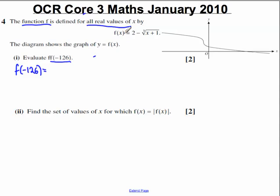Well, that's equal to, substituting in minus 126 here, 2 subtract the cube root of minus 126 plus 1, which is minus 125. What's the cube root of minus 125? What number multiplied by itself three times gives negative 125? Well, the answer is negative 5. So this is simply 2 subtract negative 5. 2 subtract negative 5 is equal to 2 plus 5, which is equal to 7. So f of minus 126 is equal to 7.